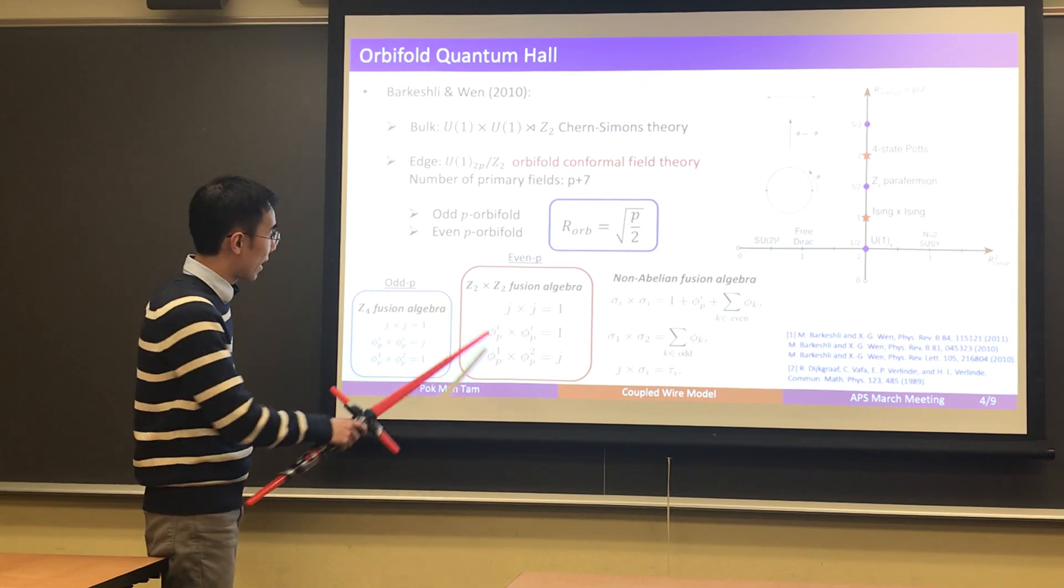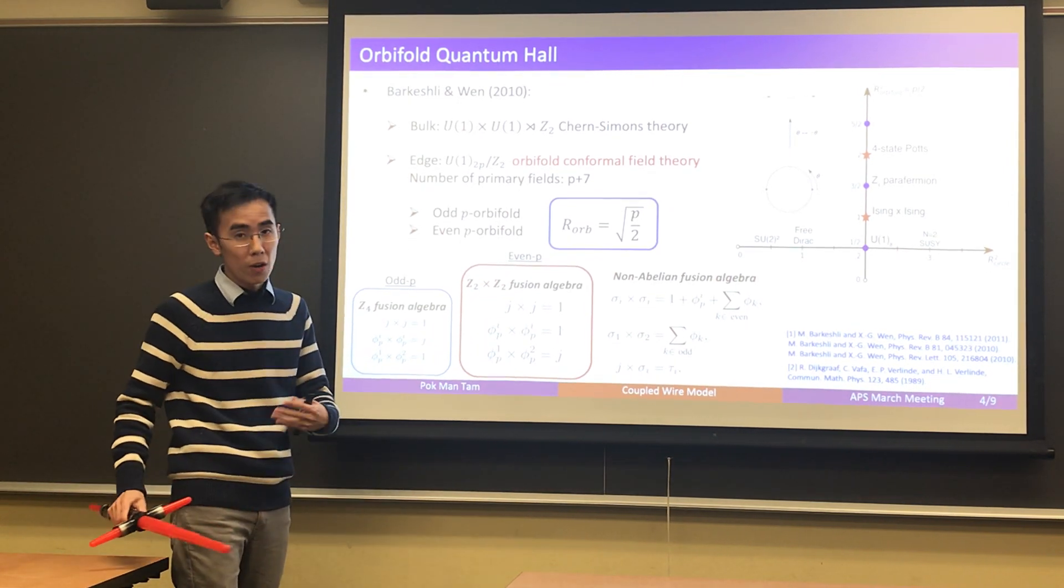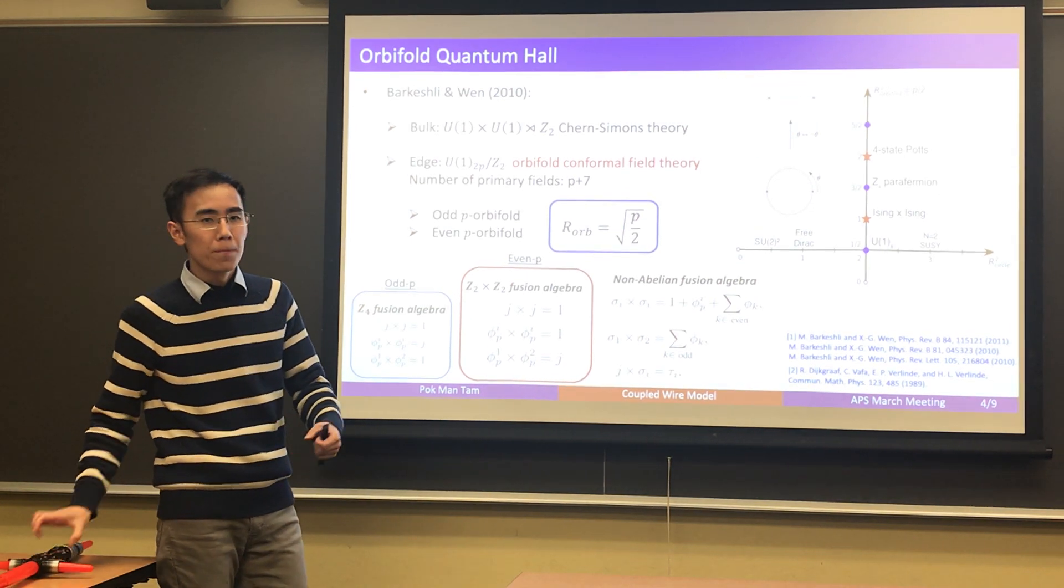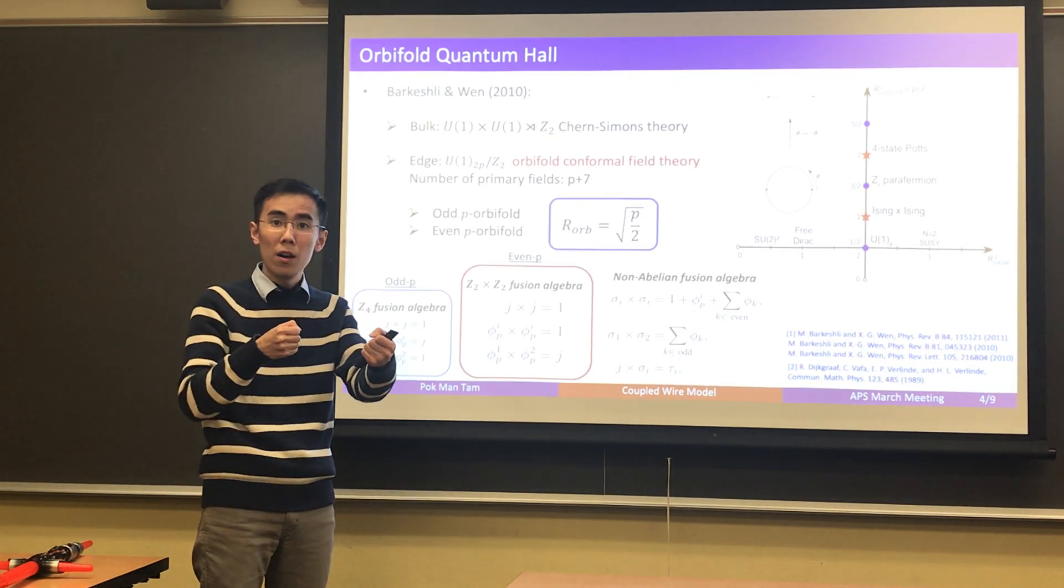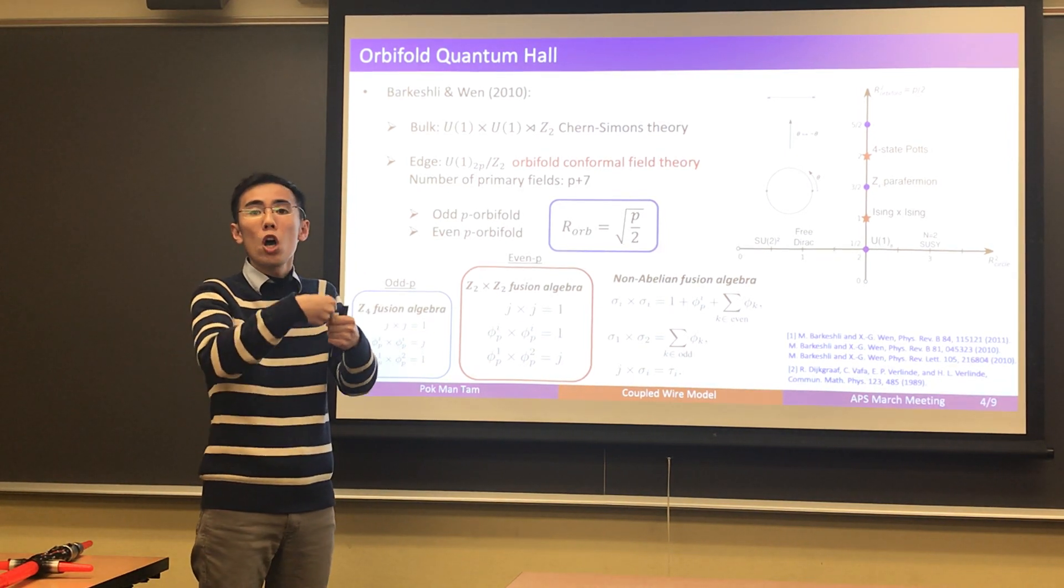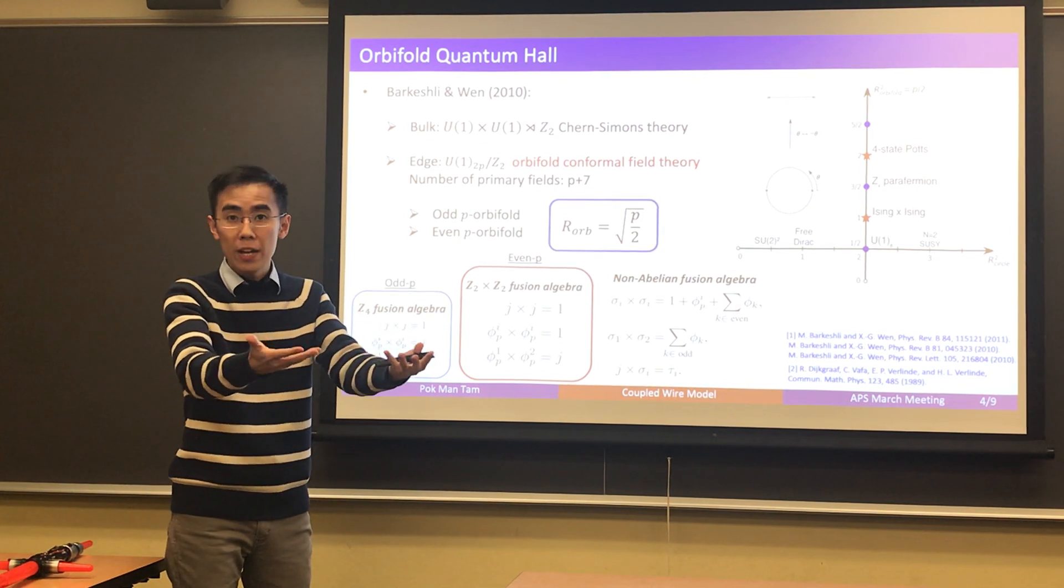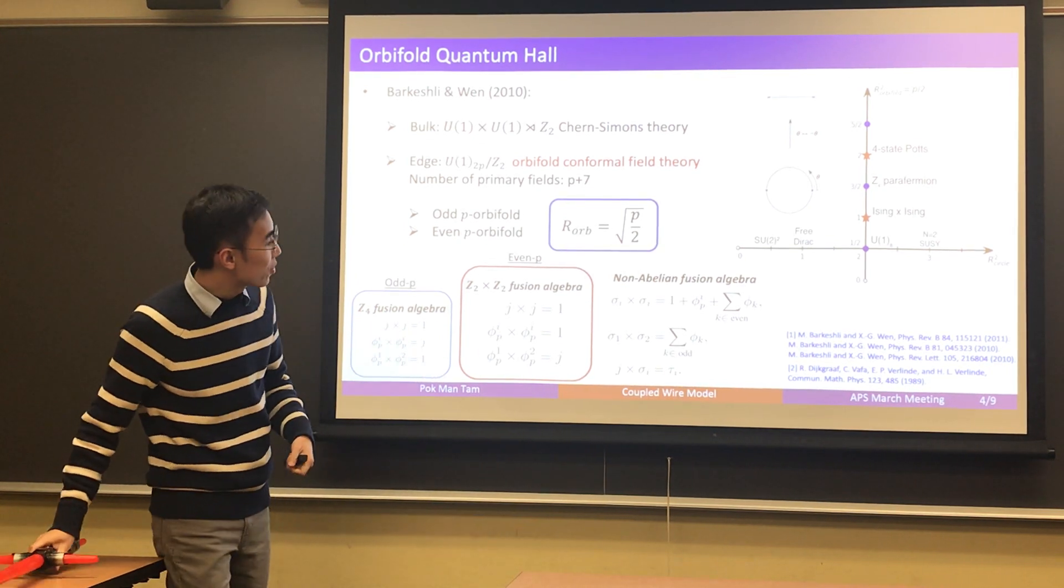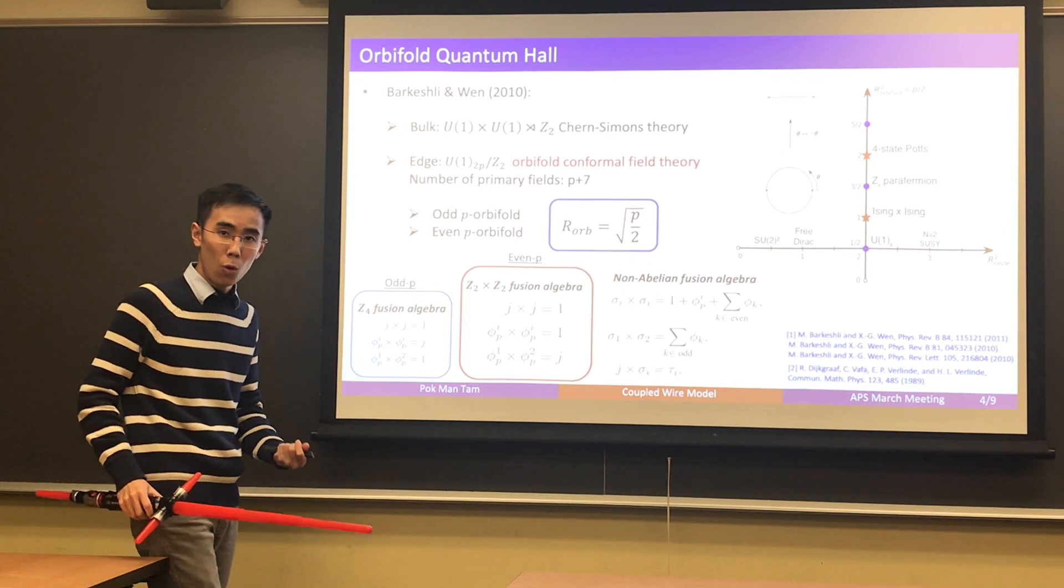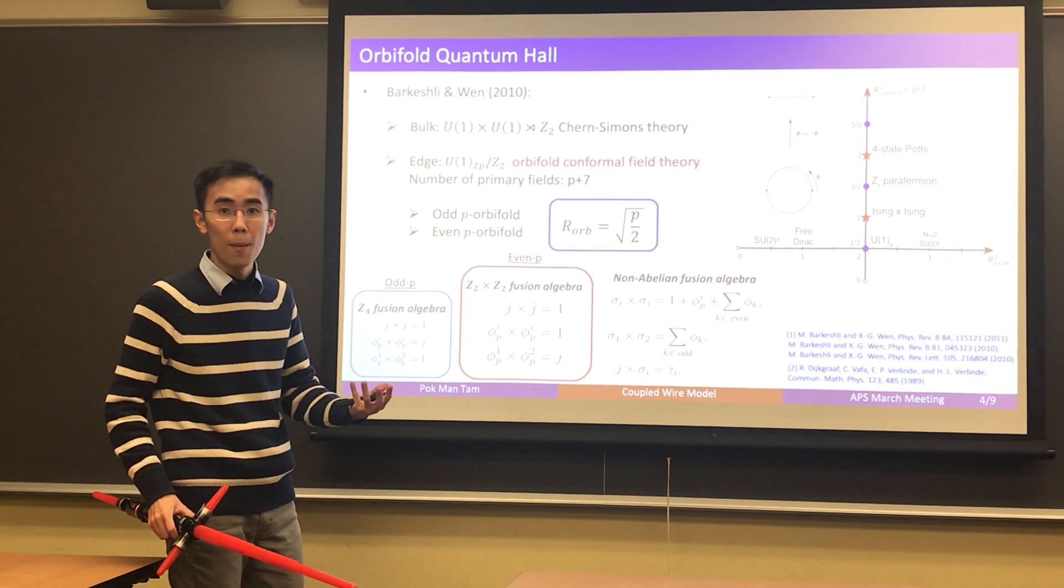Today we're going to focus on the case when p is even. For the even p orbifolds, it corresponds to fractional quantum Hall states where you have two distinct types of anyons, or quasiparticles, and each of them can be fused with its own copy, just one copy of its own copy, and form the vacuum, fused with the identity. So that is the Z2 cross Z2 orbital quantum Hall state that we want to construct out of the coupled wire model today.